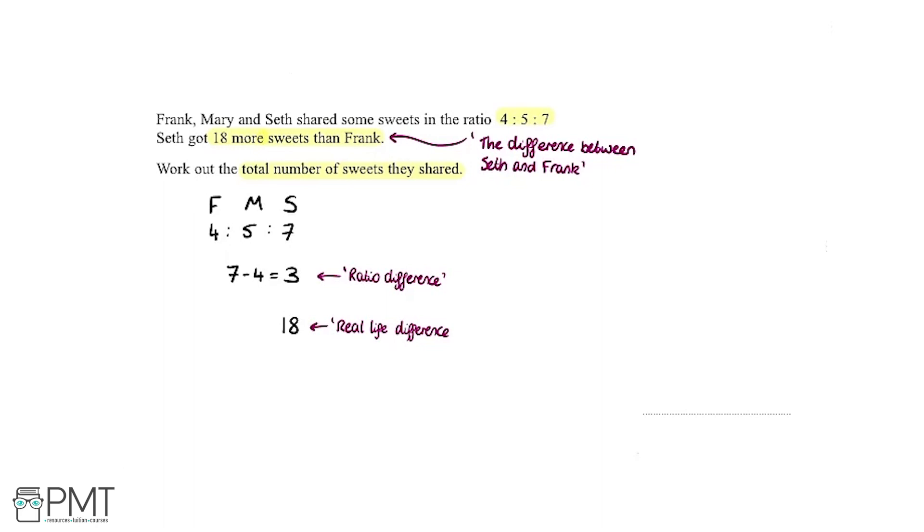Our job is to see how we can get from the ratio difference up to the real life difference, so what the link is between these two. Because we can see the numbers getting bigger, it's not subtraction or division, so it must be multiplication.